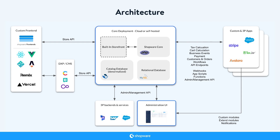An optional part of the core deployment is the built-in storefront. It is a fully functional frontend that can be used to browse the product catalog and place orders. The storefront is built with Twig and can be customized using themes and overrides of the default templates. The storefront communicates with the core using the programmatic PHP facade of the Store API.